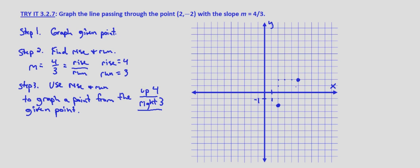And then to graph the line we simply connect these two dots. So there is the graph of the line. So I guess I should write out step four, connect the dots with a line. And then this is the graph of the line that goes to the point 2 negative 2 with a slope of 4 thirds.